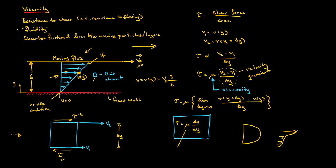This viscosity μ is called the dynamic viscosity, and it is a material property highly dependent on temperature — so we say viscosity is a function of temperature. Fluids for which the shear stress is linearly proportional to the velocity gradient are called Newtonian fluids. Most common fluids for engineering applications, including both liquids and gases, can be treated as Newtonian fluids, and this is what we will exclusively deal with in our study of fluid mechanics.